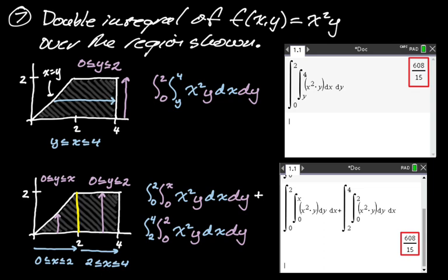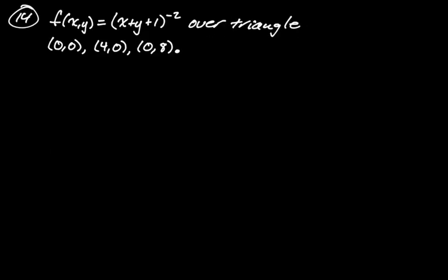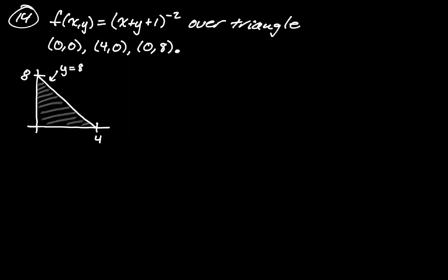Next, f(x,y) = (x + y + 1)⁻². I have no idea what that looks like, but that's fine — what I need is the region, which is the triangle from (0,0) to (4,0) to (0,8). This is a vertically simple region, so I prefer dy dx. I need the equation of the hypotenuse: going down 8 and over 4 gives slope −2, so y = 8 − 2x. X goes from 0 to 4, y goes from 0 to 8 − 2x.